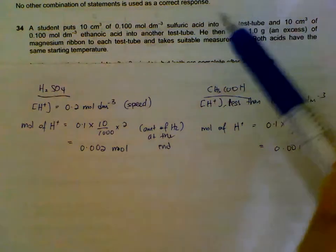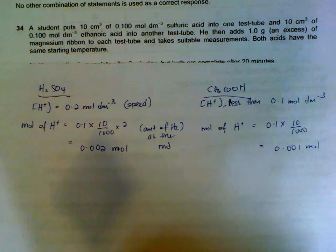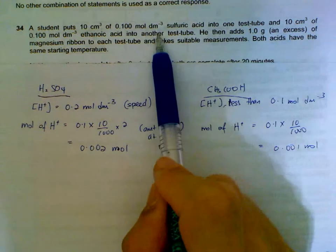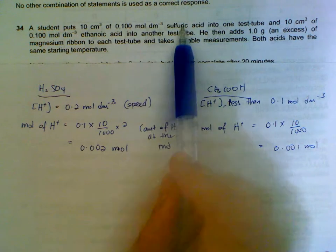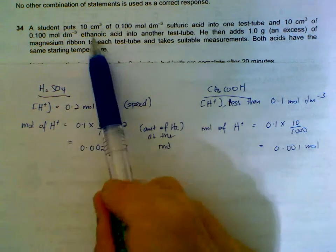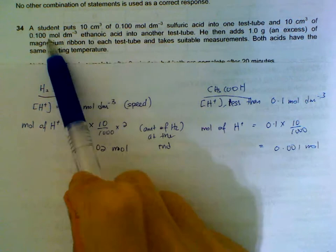Number 34, we have two experiments. The first experiment uses sulfuric acid, 0.1 mol per dm³ of sulfuric acid. The second experiment uses ethanoic acid, 0.1 mol per dm³.